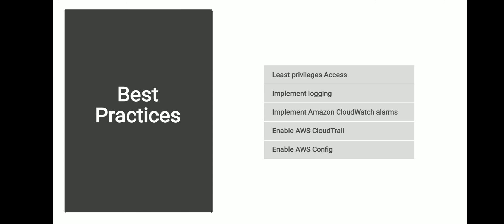The fifth best practice is enabling AWS Config. AWS Config provides a detailed view of the configuration of AWS resources in your account — you can see how resources are related, get a history of configuration changes, and see how relationships and configurations change over time. You can define rules that evaluate resource configuration for compliance. If a resource violates a rule and is flagged as non-compliant, AWS Config can alert you via an SNS topic, which is very useful from a configuration management perspective.